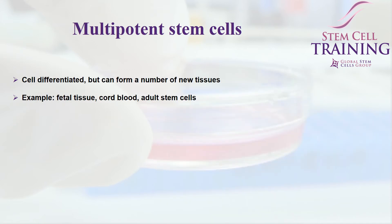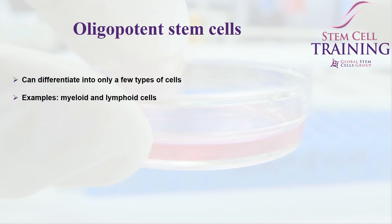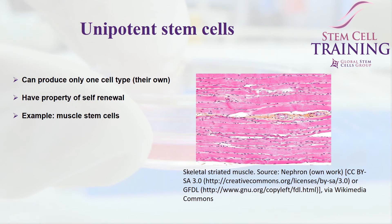Multipotent stem cells are adult stem cells that can be obtained from fetal tissue, cord blood, bone marrow, or adipose tissue. These cells are already somewhat differentiated but have the ability to form a number of different tissues, and are therefore referred to as multipotential. Oligopotential stem cells can differentiate only into a few types of cells; examples include lymphoid and myeloid cells. Unipotential stem cells can only produce one type of cell — muscle is a good example, where muscle stem cells can only produce muscle, but they still have the property of self-renewal and so by that definition can be considered a stem cell.